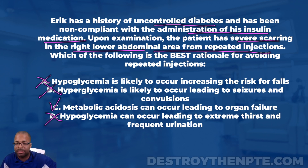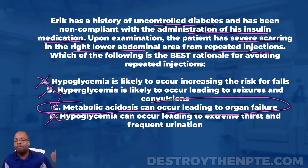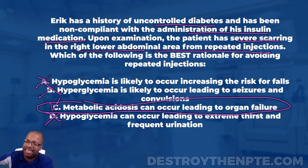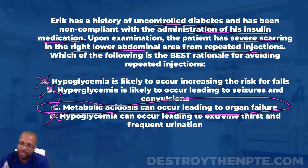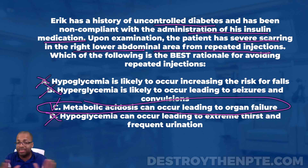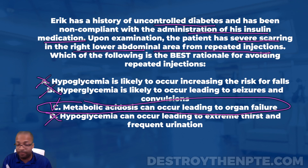Looking at all of A, B, C, and D — the absolute best answer is C: metabolic acidosis can occur leading to organ failure. If you got this correct, congratulations — it's not an easy one. You have to do a little mental gymnastics to get to the right answer.